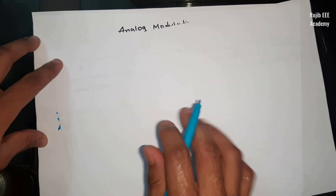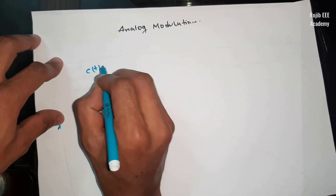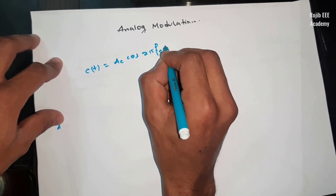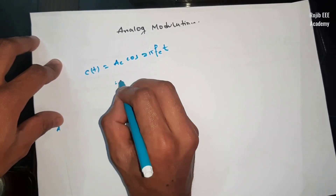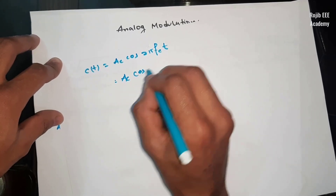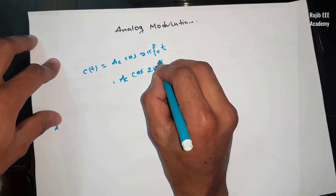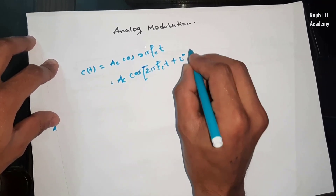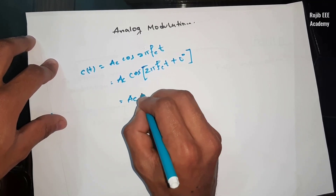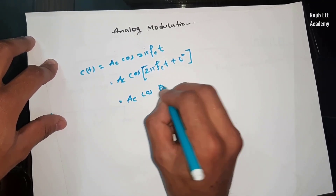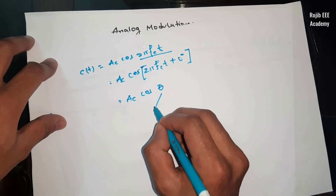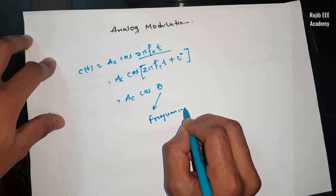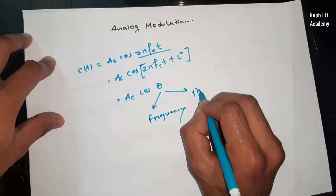The carrier signal is c(t) = Ac·cos(2π·fc·t). That means Ac·cos(2π·fc·t + 0°), which means Ac·cos(θ), where θ is the instantaneous phase.